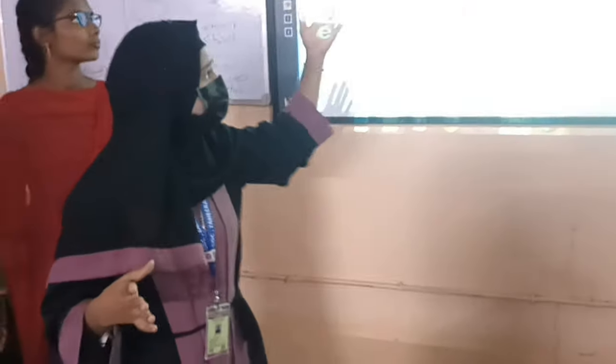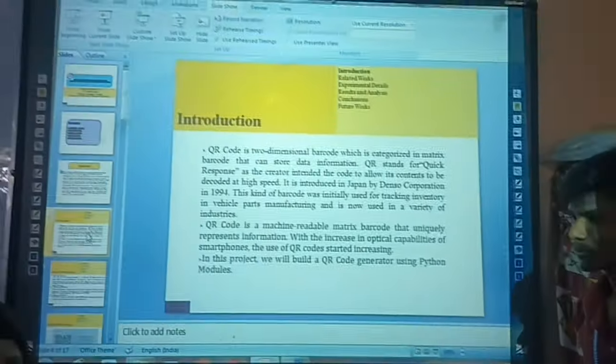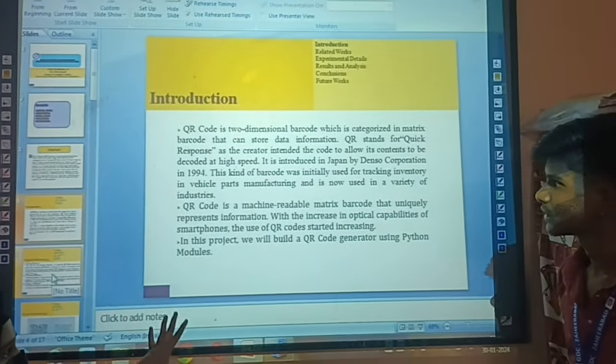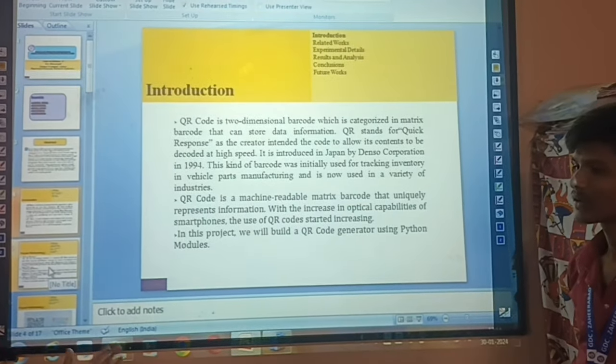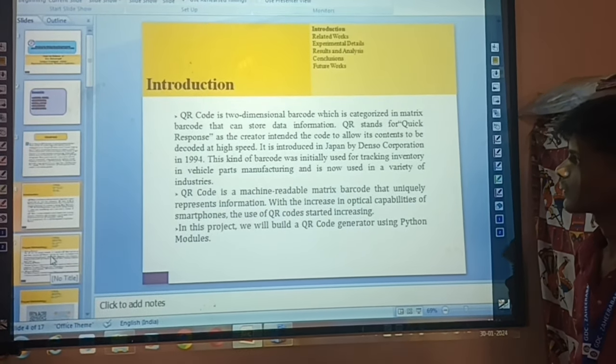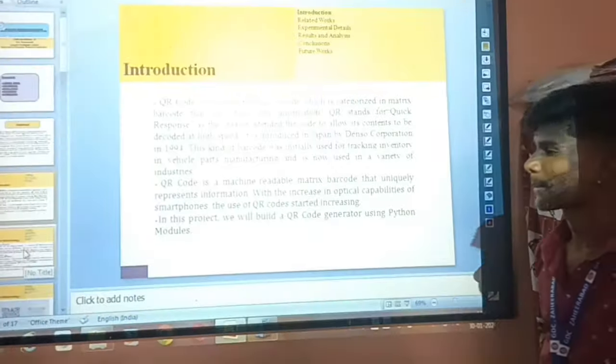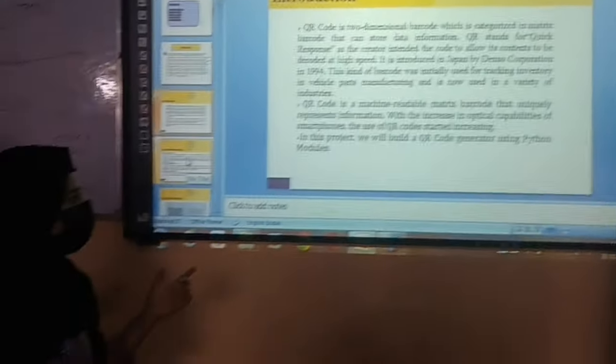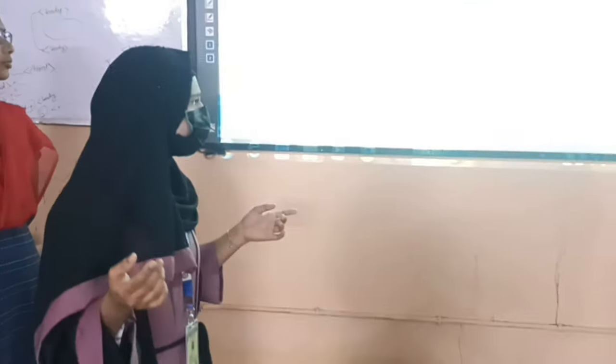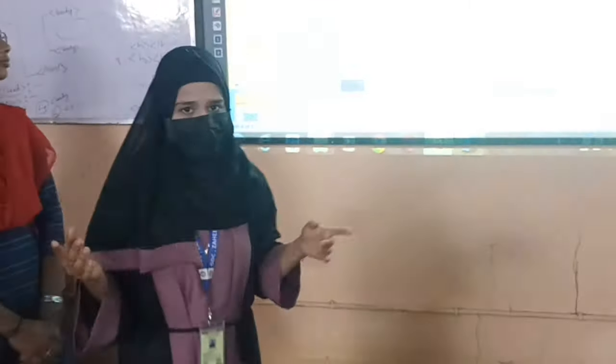Next is the introduction. QR was first introduced in Japan. QR is a machine-readable matrix barcode that uniquely represents information. With the increase in optical capabilities of smartphones, the use of QR codes started increasing. In this project, we will make QR codes generated using Python.